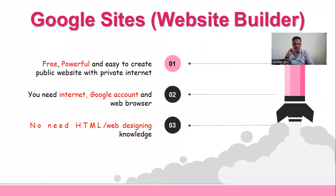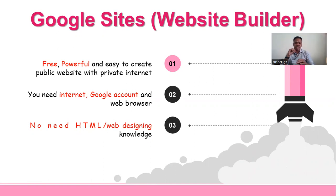The first tool we are going to see is Google Sites. Google Sites can be used to design a website mainly for your organization or even for yourself. It is helpful for faculty members — you can design your own website and share all your course materials to students easily. You don't need any technical skills; there are ready-made drop-down options. It is a free, powerful, and easy platform. You only need internet, a Google account, and a web browser — no HTML or web design skills needed.